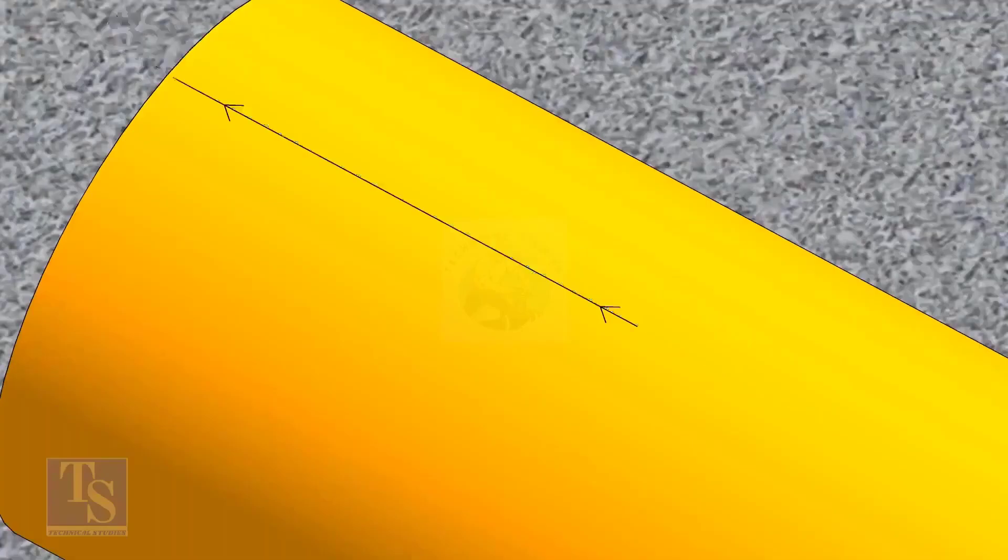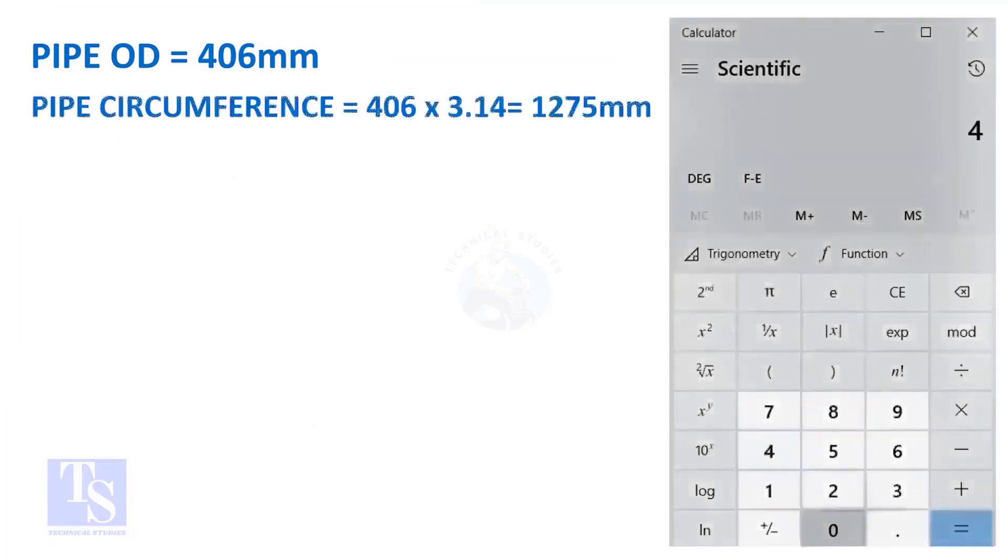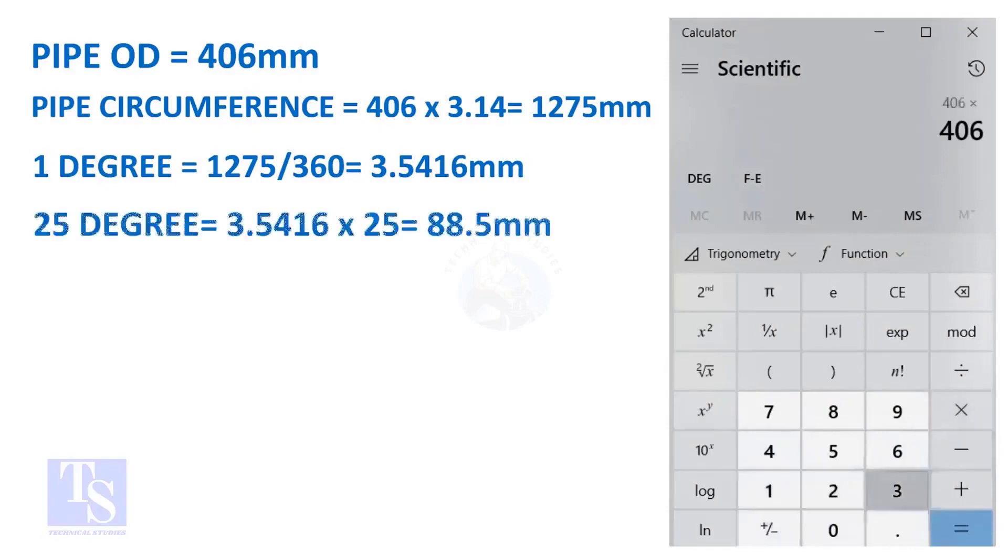Let us calculate the circumferential distance or arc length for 25 degrees. Multiply the OD by 3.14. You will get the circumference of the pipe. Divide the circumference by 360, you will get the arc length of 1 degree. And finally, multiply the 1 degree arc length by 25. Now you have the arc length of 25 degrees. You can apply this formula to get the arc length of any degree.